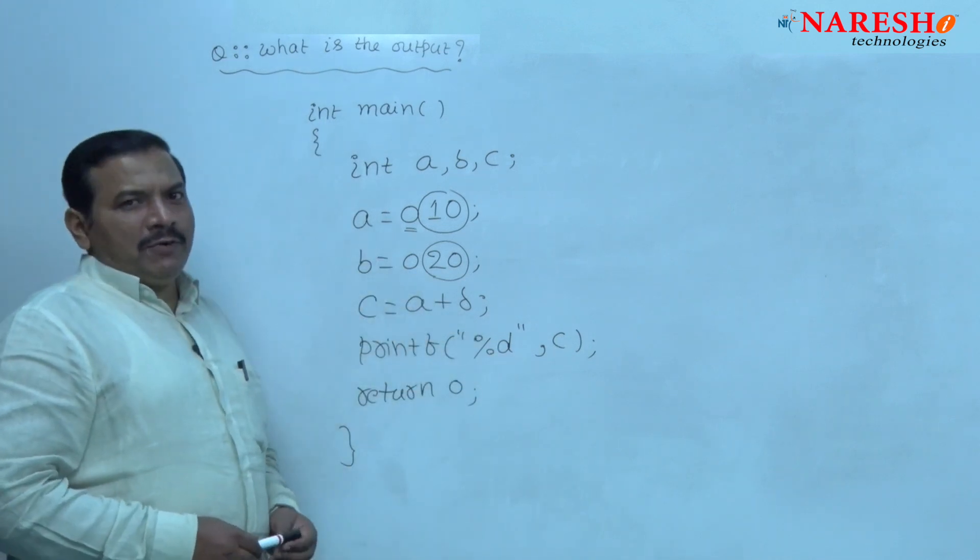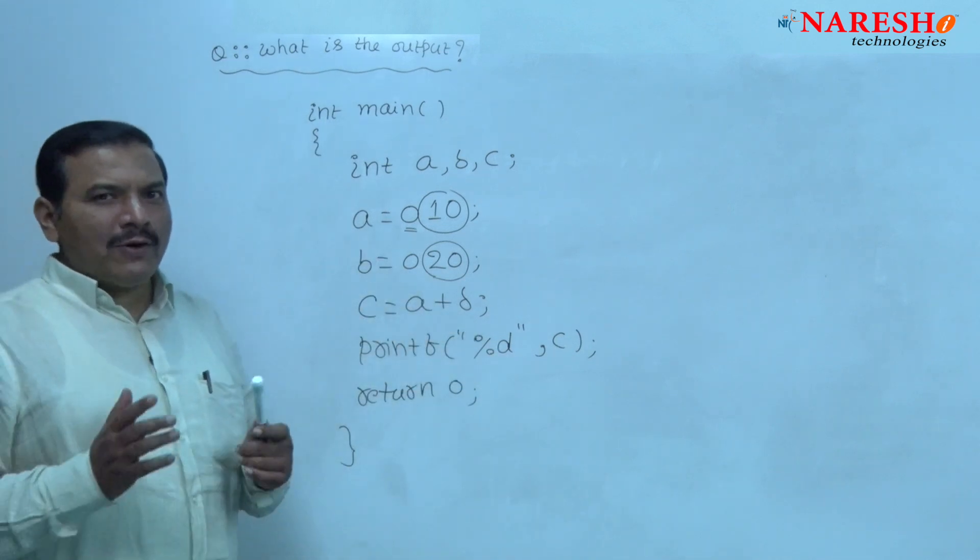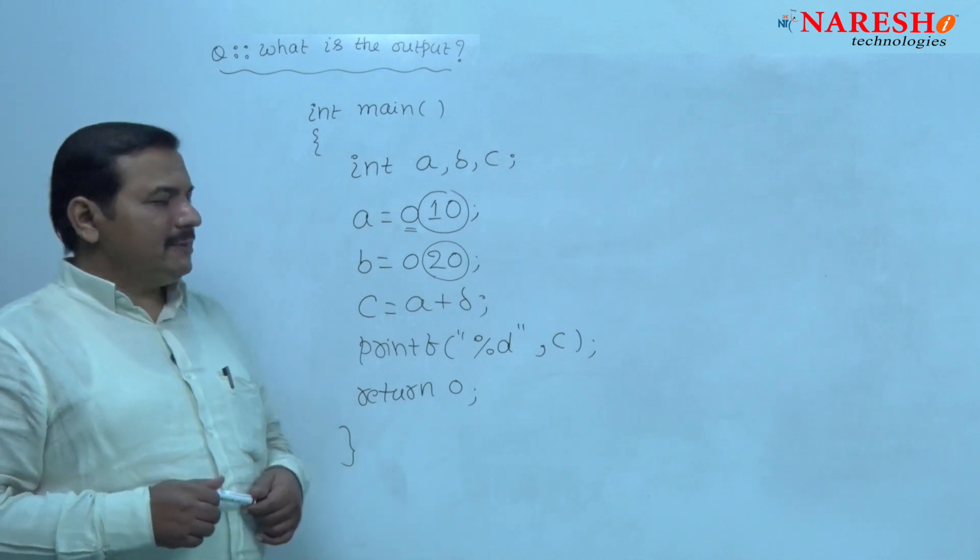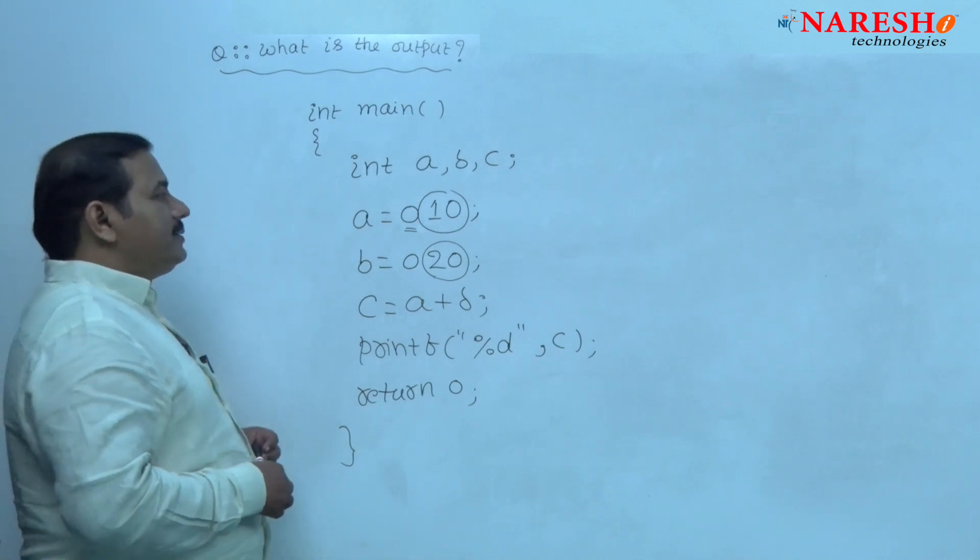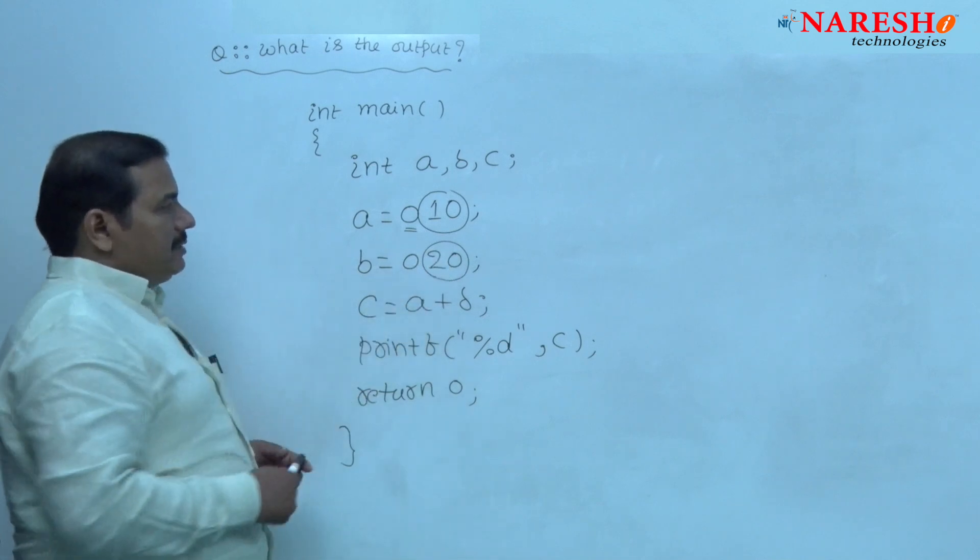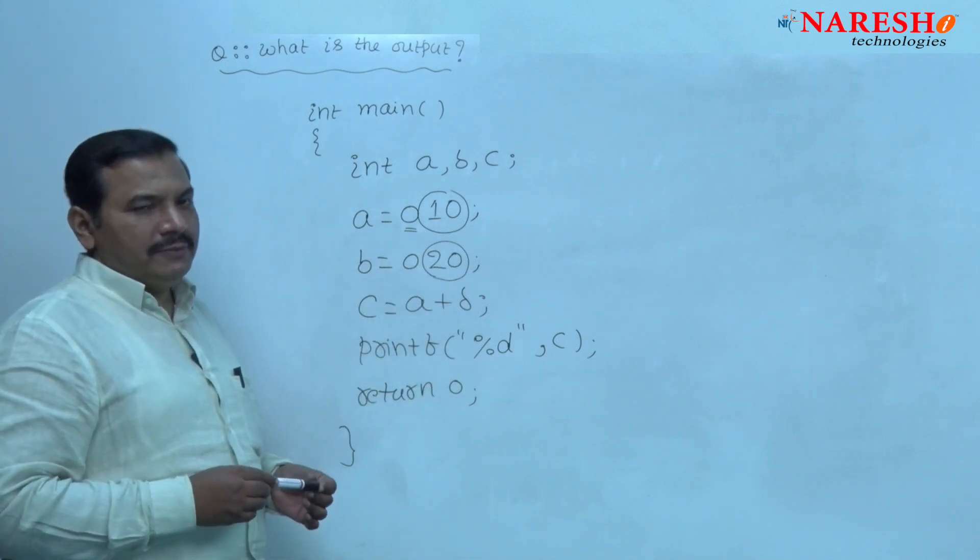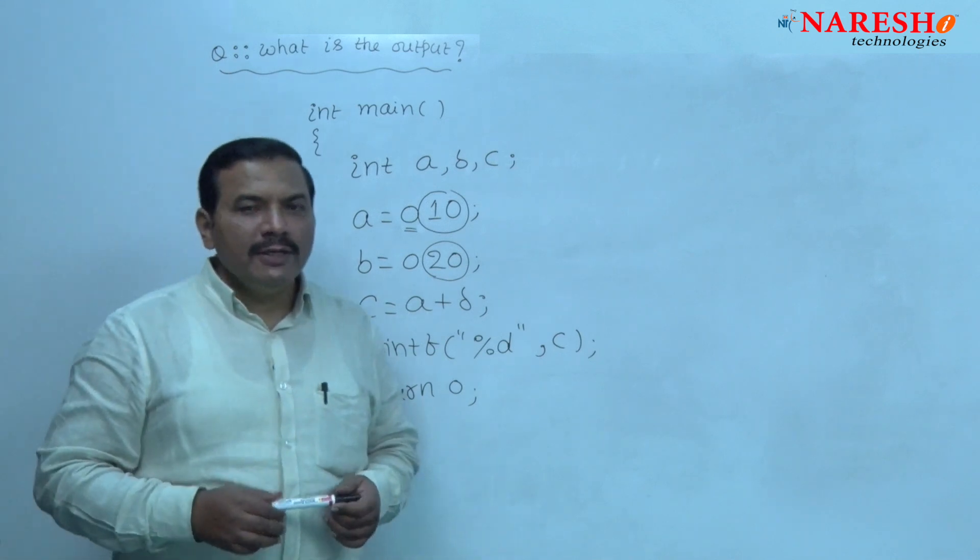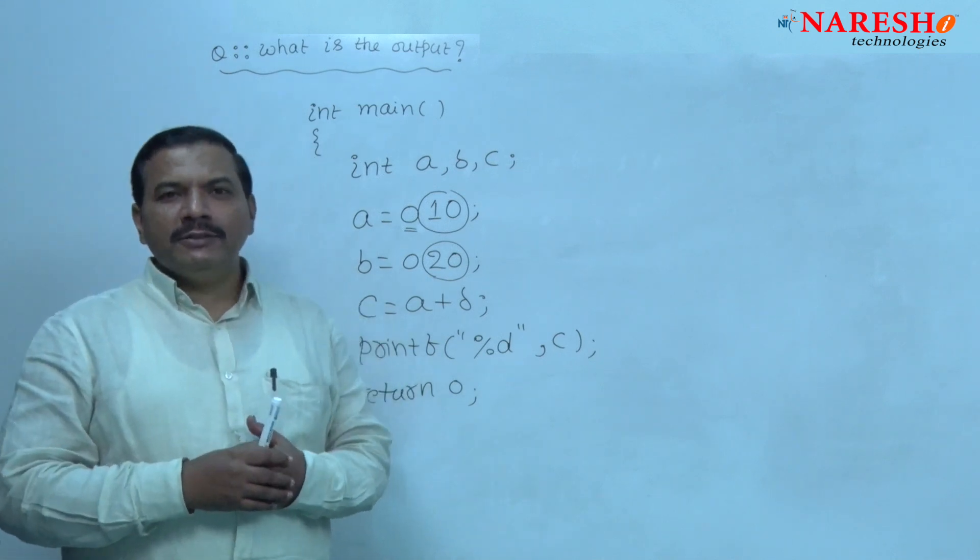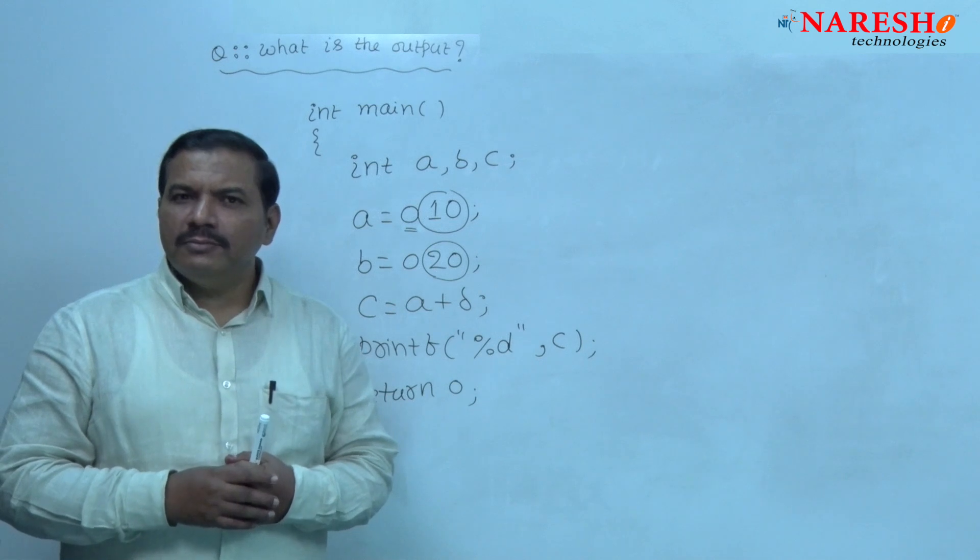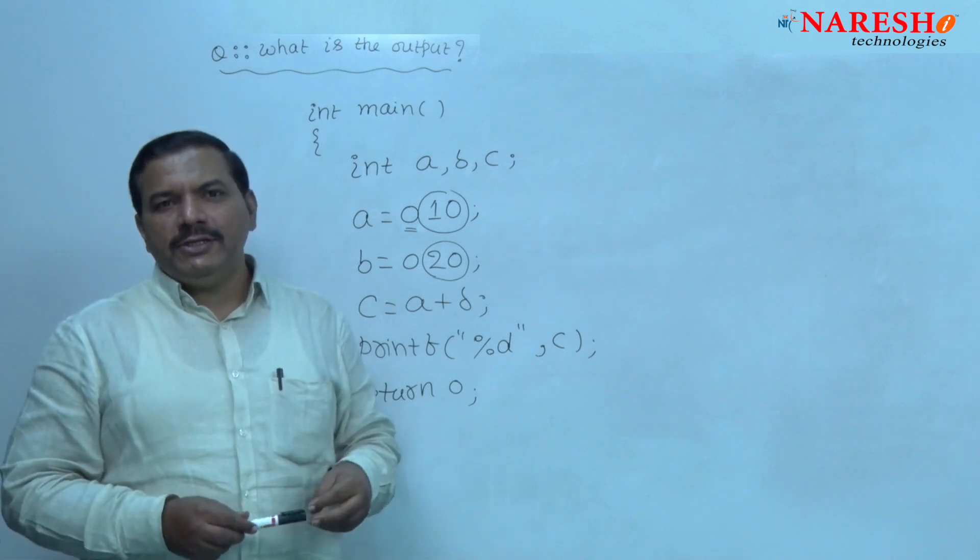This is a question on addition of two octal integers. In this question, 10 and 20 are the two octal integer constants. An integer constant which is preceded with digit 0 is known as an octal integer constant.